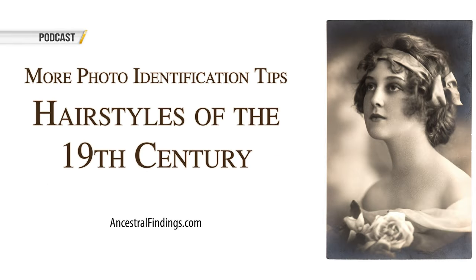Do you have old 19th century photographs that you can't identify? If these photos were handed down to you through your family, you were probably looking at your ancestors without knowing which ones they are. There are a lot of photo identification methods you can use to give you a better idea of who these people are. The type of photograph, the style of clothes, and clues in the background of the photo are just some of the techniques you can use. You can also use hairstyles to help you narrow down the identities of your mysterious ancestors.